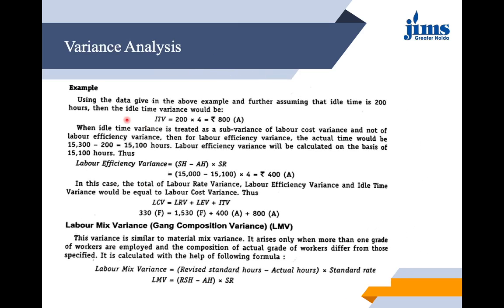As an example, if idle hours are 200 and rate is 4, idle time variance is 800 adverse. When idle time variance is treated as a sub-variance of labor cost variance rather than labor efficiency variance, the labor efficiency variance is calculated on the basis of 15,100 hours, not 15,300. In this case, labor rate variance, labor efficiency variance, and idle time variance together equal the labor cost variance.